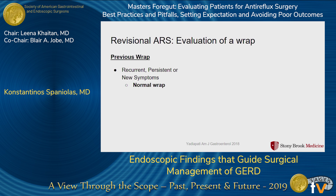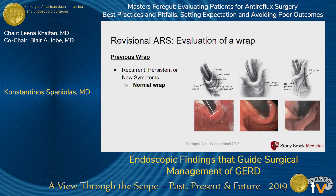Patients who have a previous fundoplication and present with symptoms can be a challenging population. Endoscopy can provide a lot of information that cannot be replaced otherwise. It's important to know what a normal wrap is supposed to look like — these are schematic and endoscopic views of a Nissen, a Toupet, and a Dor fundoplication. During endoscopy, you can often get a good idea if it's a tight wrap by resistance to the diagnostic scope or any puckering or rings of the distal esophagus.